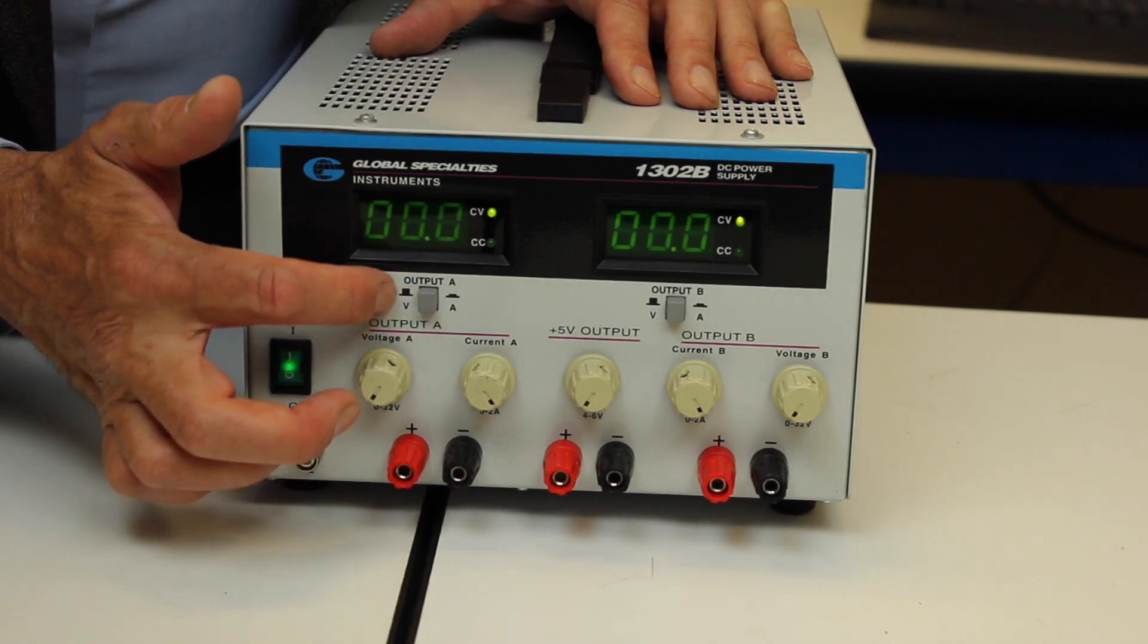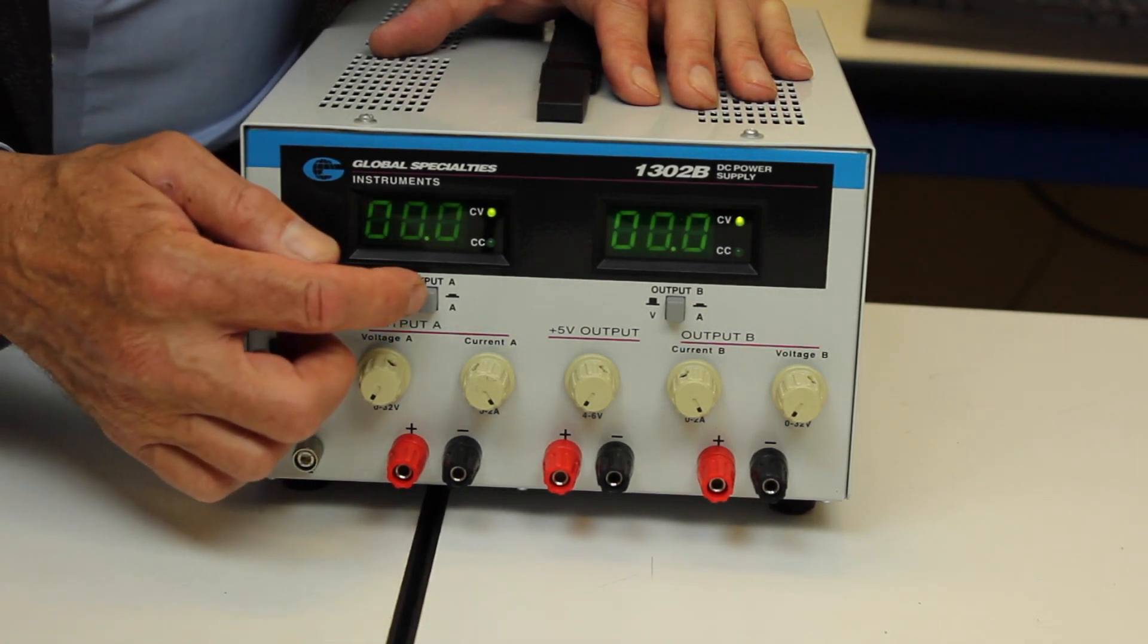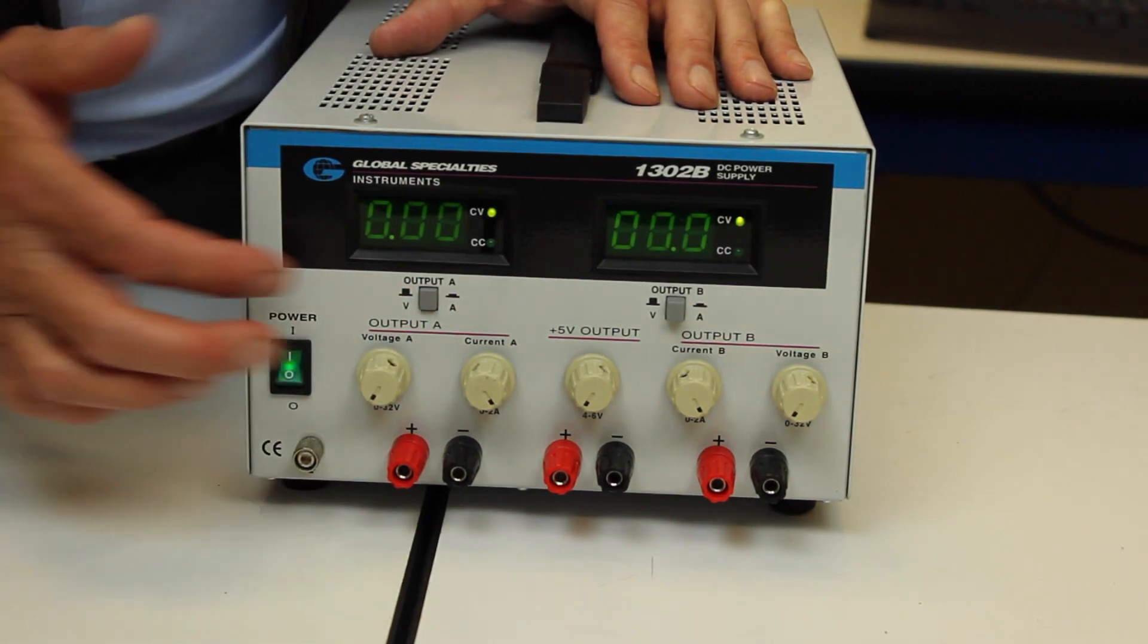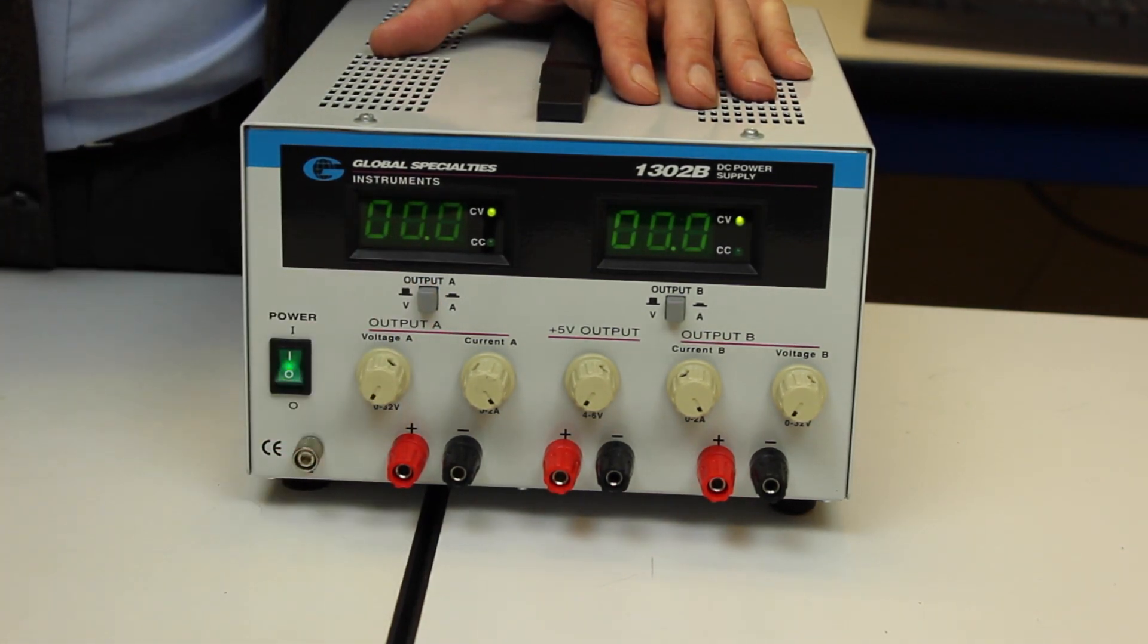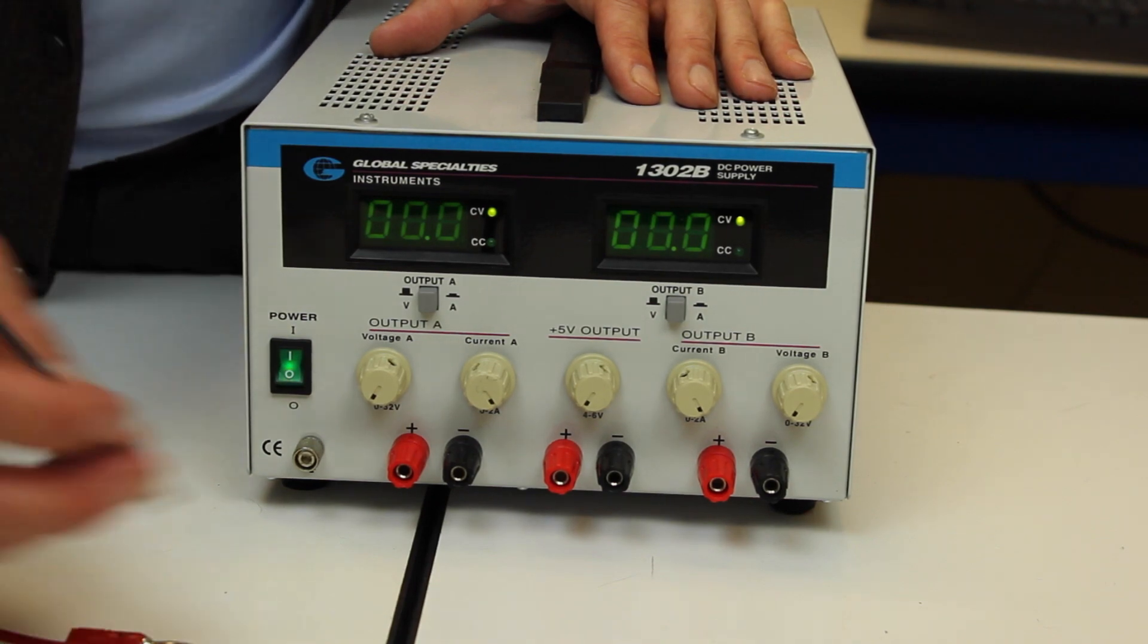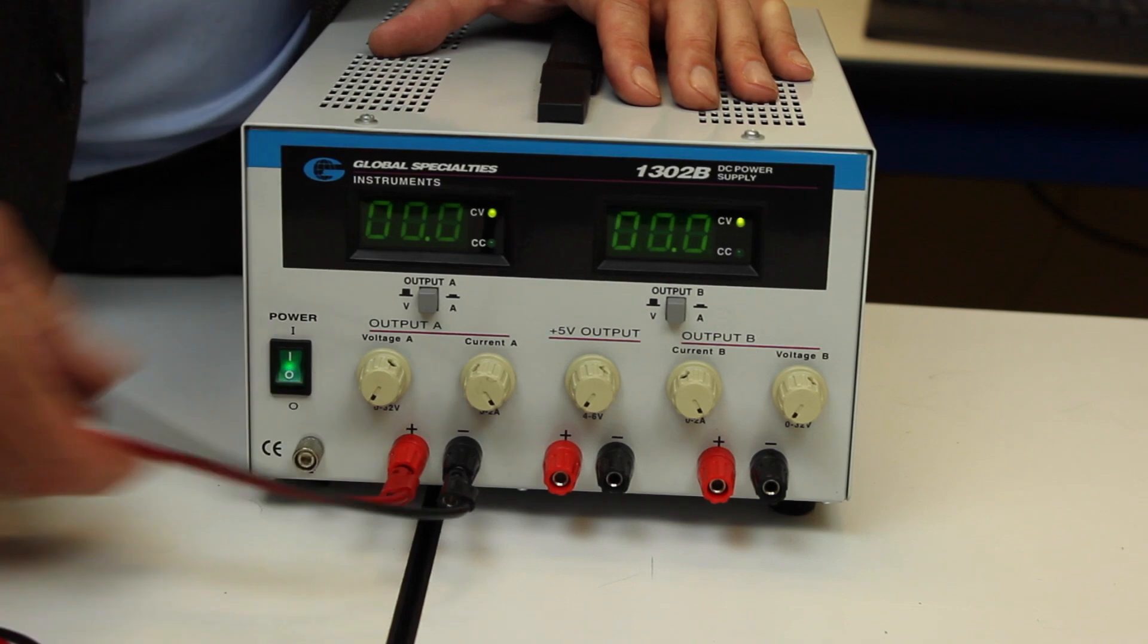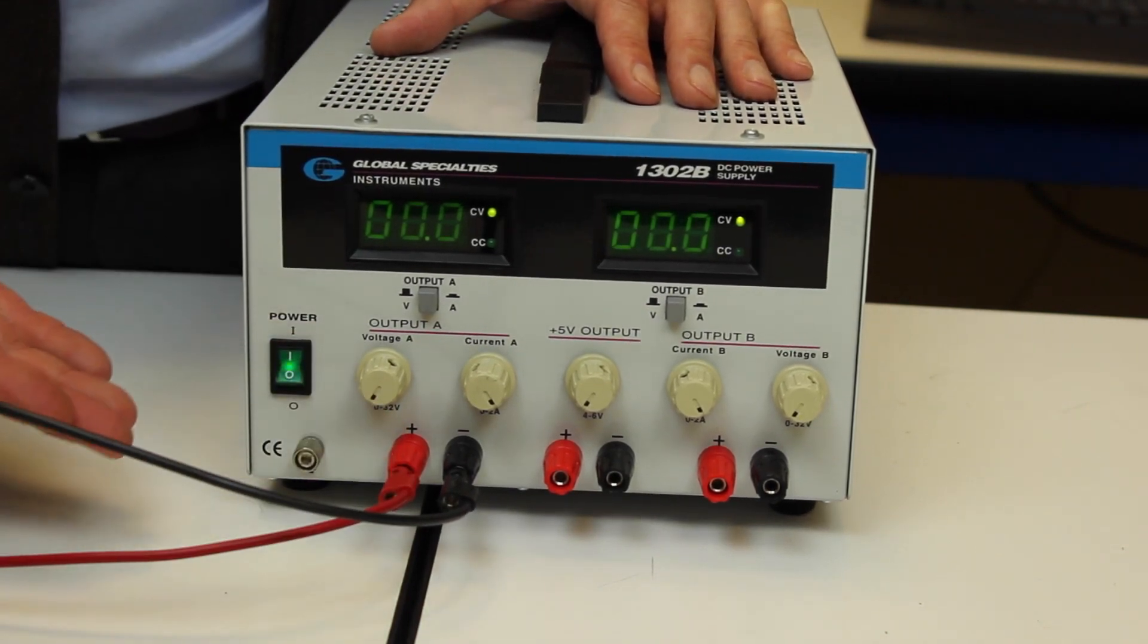The same thing repeats itself over here with this other supply. This little button here, when it is out, it allows us to read the voltage. When it's pressed in, this reads the current. And we'll talk about the current more in the next lab. So when we want to hook this up to some circuit, we use our banana cables. The black cable and the red cable go here. And then this just takes the power to our protoboard.